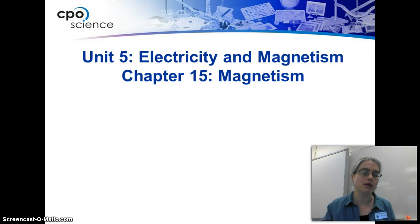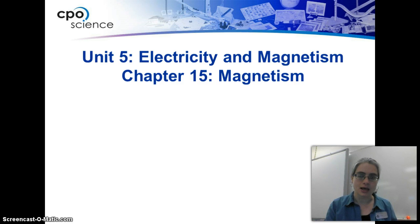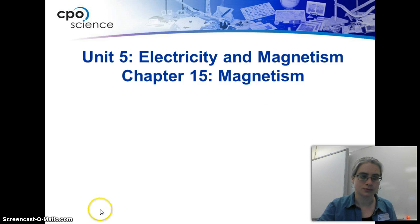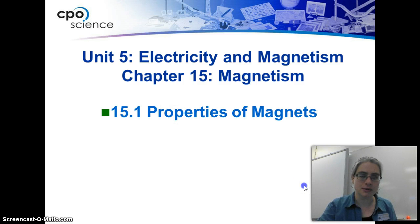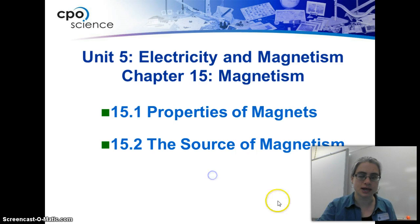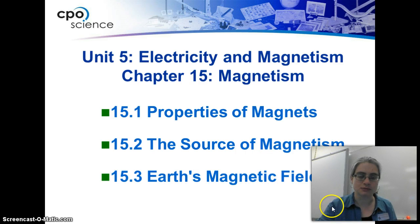A strong magnet is going to have a stronger field, and a weaker magnet is going to have a weaker field. These fields are actually able to show forces and impact and move things without actually having physical contact. We've talked about the properties of magnets, and we'll talk today about the source of magnetism and Earth's magnetic field.